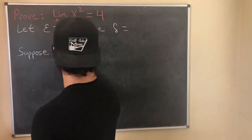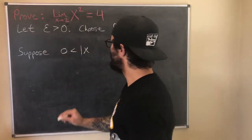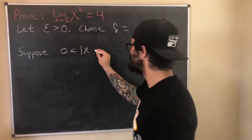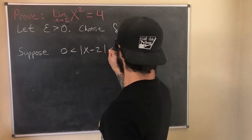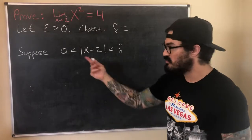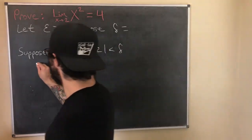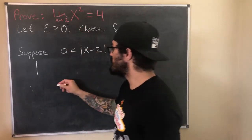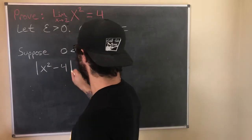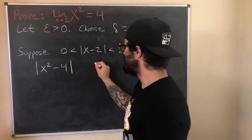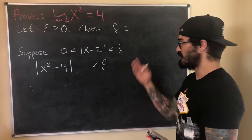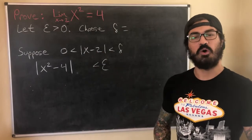I'm going to continue outlining the proof. Once we have delta, what we're going to do next is assume that the delta expression is true — that's this: zero less than |x − 2| less than delta. Then from here we're going to try to show that this assumption leads to |f(x) − L|, which in this case is |x² − 4|, being less than epsilon. We just need to first find the delta that makes this all work out.